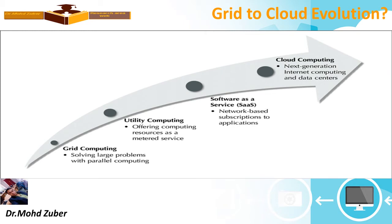Grid to cloud evolution. Grid computing involved solving large problems with parallel computing. After grid, utility computing was used — offering computing resources as a metered service. After utility computing, software as a service came: network-based subscription to applications. And after that, cloud computing came into society as next generation internet computing and data centers. This is the cloud evolution.